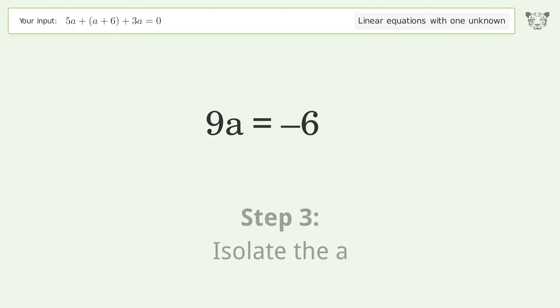Isolate the a by dividing both sides by 9, then simplify the fraction.